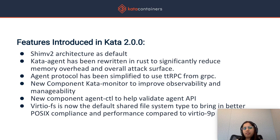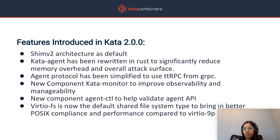The agent protocol, which is the protocol the runtime uses to communicate with the agent, was simplified to use TTRPC instead of gRPC. TTRPC is a much lighter-weight protocol compared to gRPC. A new component called Kata Monitor was added to improve observability and manageability. This tool can be used with other tools in the Kubernetes ecosystem such as Prometheus in order to gather useful container metrics from Kata.